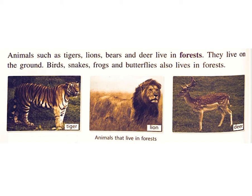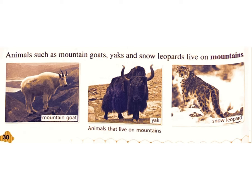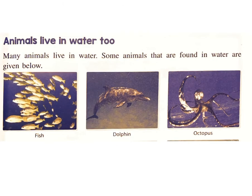Animals such as tigers, lions, bears, and deer live in forests. Birds, snakes, frogs, and butterflies also live in forests. Animals such as mountain goats, yaks, and snow leopards live on mountains.